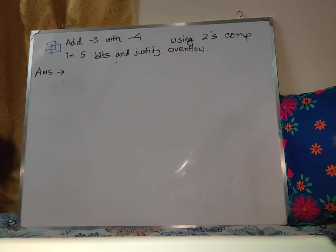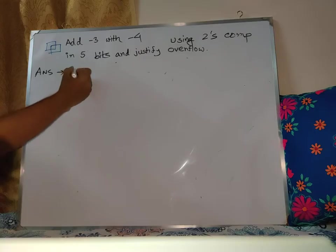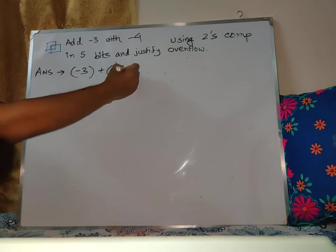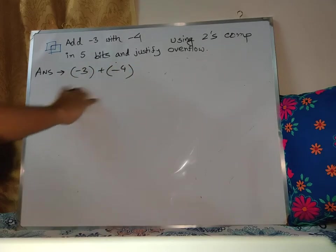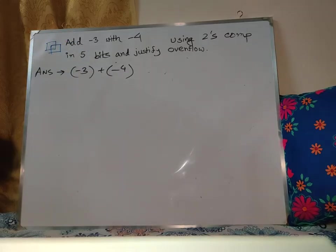Okay, so I'm going to show you mathematically what you need to write. So basically this is minus 3 plus minus 4. Minus 3 and minus 4 are negative numbers, so both are negative versions.